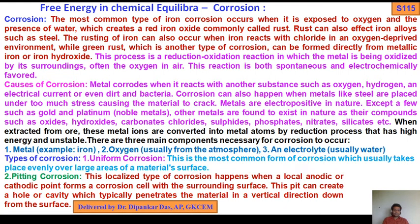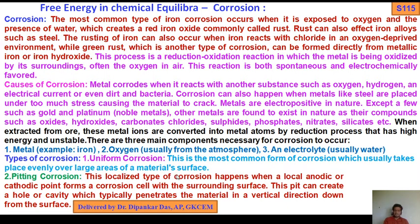Now, types of corrosion — there are so many. The first one is uniform corrosion. Uniform corrosion is the most common form of corrosion, which usually takes place evenly over large areas of a material surface.